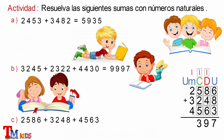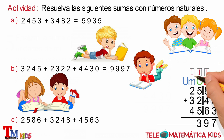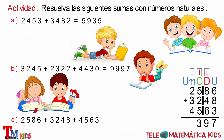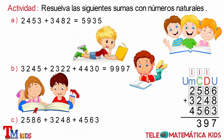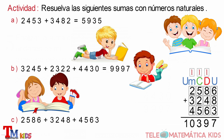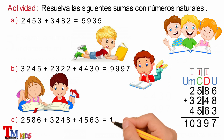Y por último, sumamos los elementos de la columna de las unidades de mil: 1 que llevamos más 2 es igual a 3, 3 más 3 es igual a 6, y 6 más 4 es igual a 10. Y este resultado lo escribimos en la operación de 2.586 más 3.248 más 4.563.